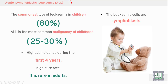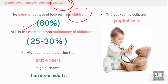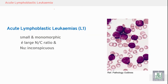Acute lymphoblastic leukemia, or ALL, is the most common type of leukemia in children, accounting for 80% of childhood leukemias. It is the most common malignancy of childhood, with the highest incidence during the first four years of life and a high cure rate. It is rare in adults. The leukemic cells are lymphoblasts — more immature acute lymphoblasts.